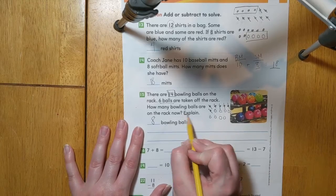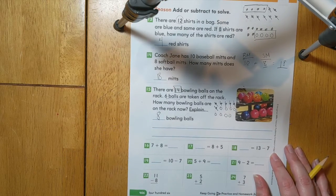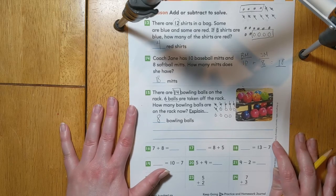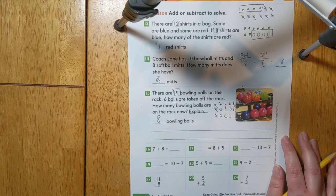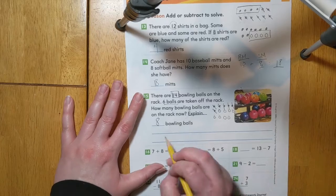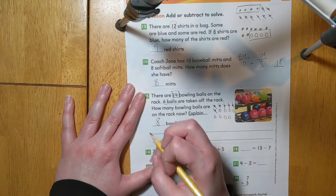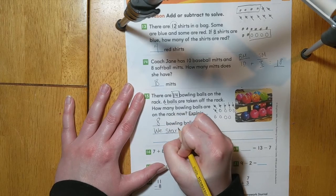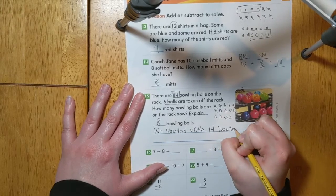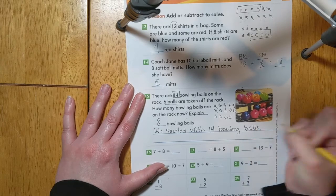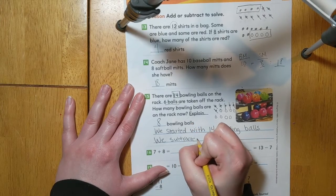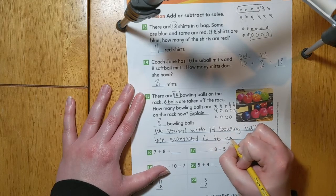Next, they want us to explain. We can say that we either started with 14 bowling balls and subtracted 6 to give us 8, or we can talk about how we counted on to find the number. Let's go ahead and write our explanation. We started with 14 bowling balls and subtracted 6 to give us 8.